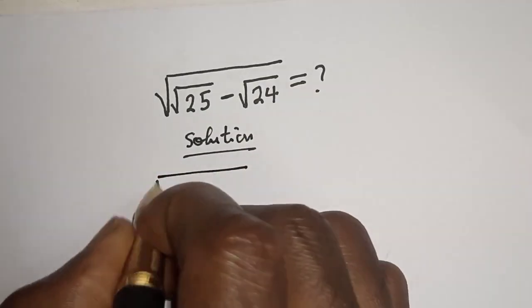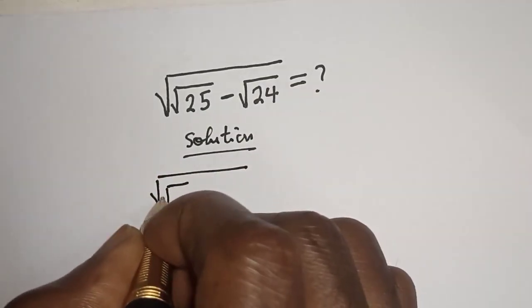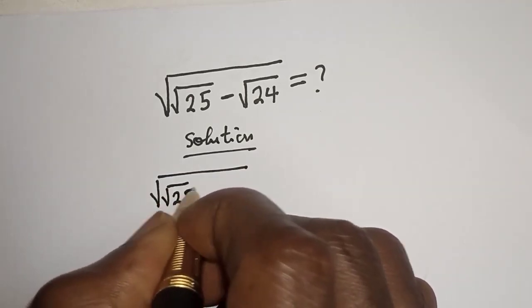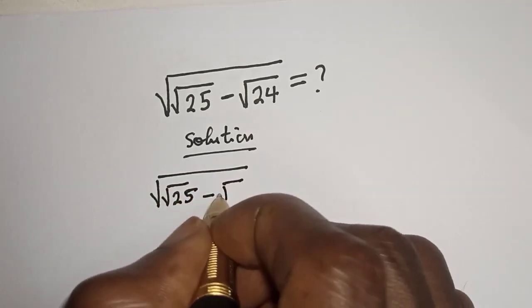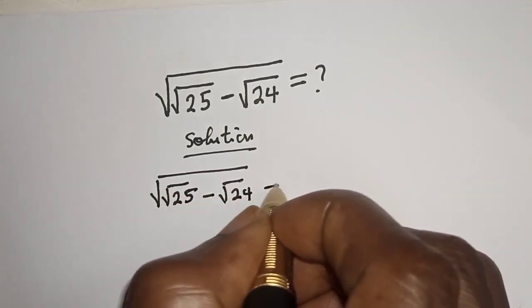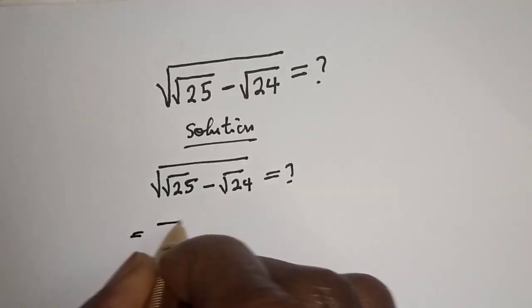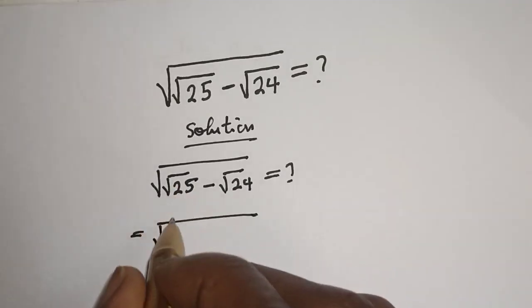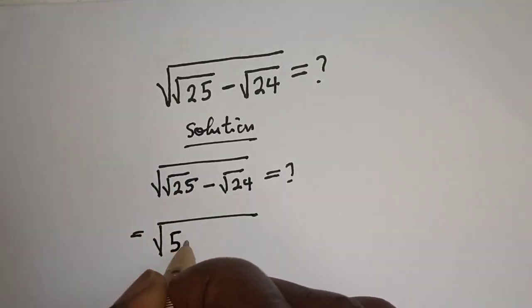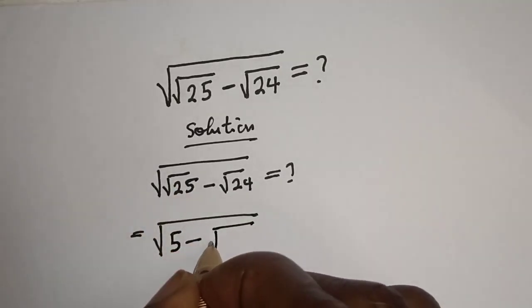We have square root of square root of 25 minus square root of 24. This is equal to square root of, square root of 25 is 5, minus square root of 24.